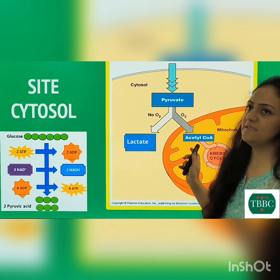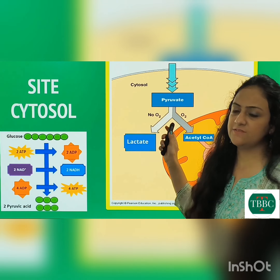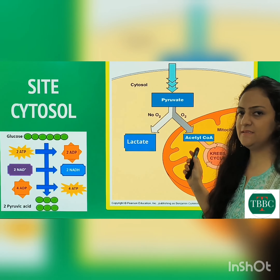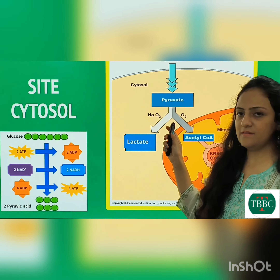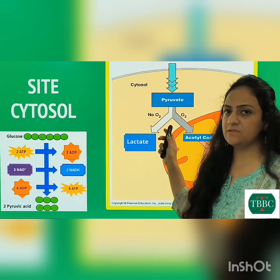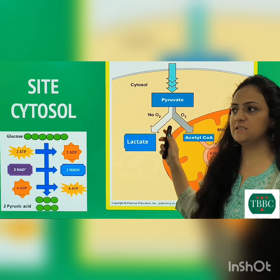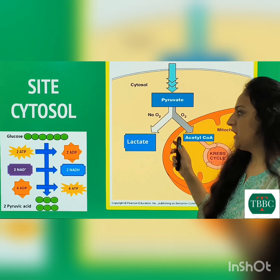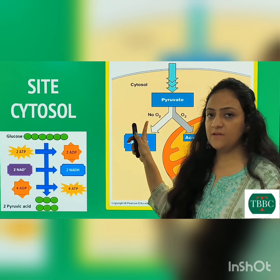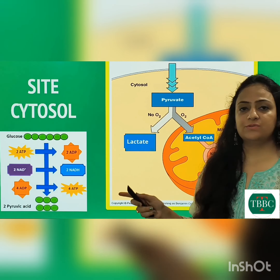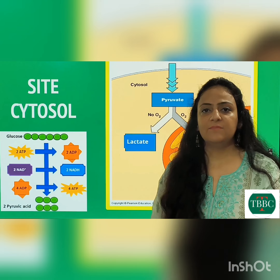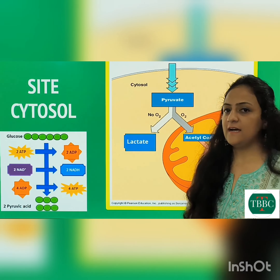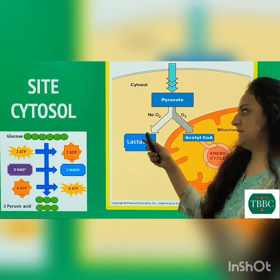The fate of pyruvate formed from glucose depends upon the presence or absence of oxygen, or the presence or absence of mitochondria. If mitochondria is present and oxygen is available, pyruvate is converted to acetyl-CoA, and the NADH formed is utilized in the electron transport chain or the respiratory chain.